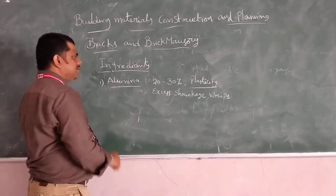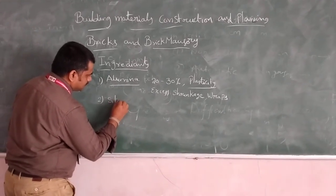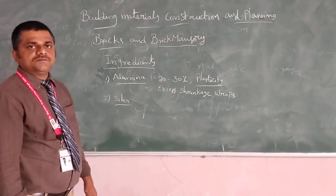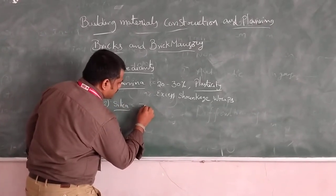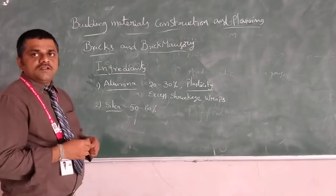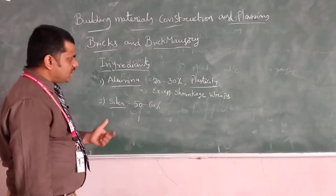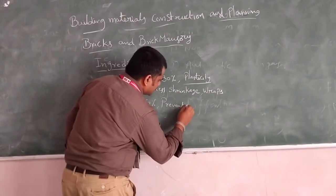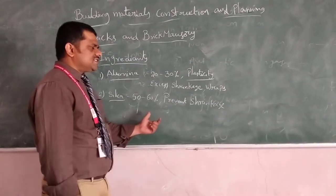Next one is silica. The percentage of silica is very high. Silica plays a major role also. Without silica we can't get the brick. The percentage of silica is 50 to 60 percent. What is the main duty of silica? It prevents the shrinkage.